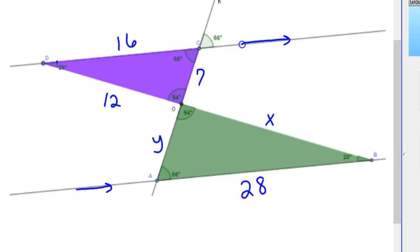Since the lines are parallel, this angle is 66 degrees means this angle is 66 degrees. Those are alternate interiors. 94 and 94, those are vertical. And 20 and 20, alternate interiors again. So we know that those two triangles, because all the angles are equal, are similar.